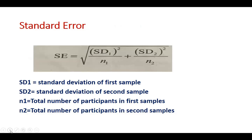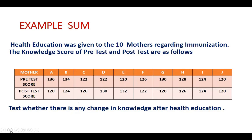SD₁ is the standard deviation of the first group, SD₂ is the standard deviation of the second sample, n₁ is the total number of participants in the first sample, and n₂ is the total number of participants in the second sample. For example: health education was given to 10 mothers regarding immunization. The knowledge scores of pre-test and post-test are as follows — pre-test scores: 136, 134, 122, and so on; post-test scores: 120, 124, 126, and so on.